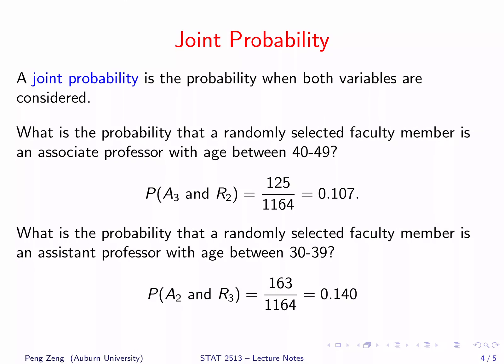A joint probability is the probability when both variables are considered. To calculate a joint probability, we follow the same strategy: count the number of outcomes in the event and then divide by the total number of outcomes. Notice that a joint probability is still a probability. We use the word joint simply to emphasize that it involves more than one variable.